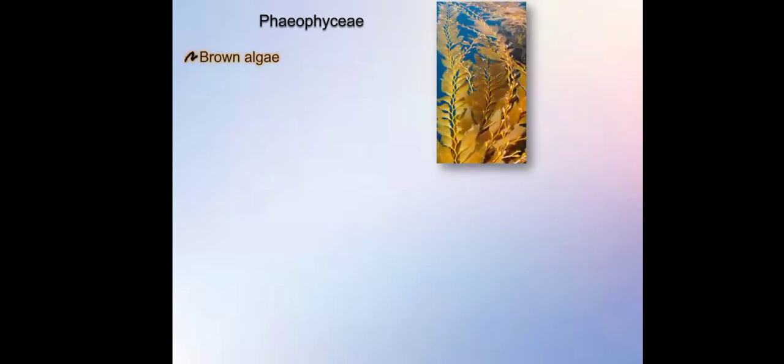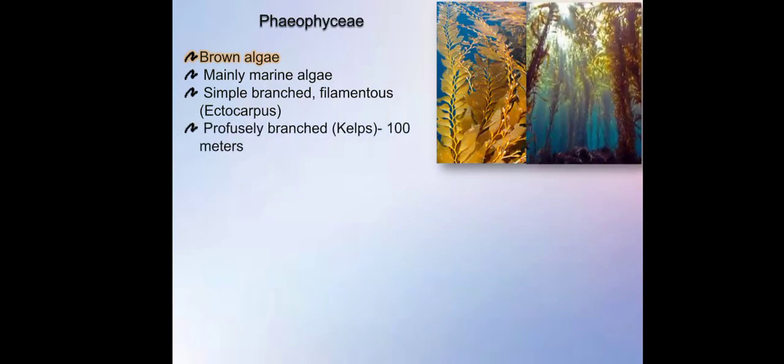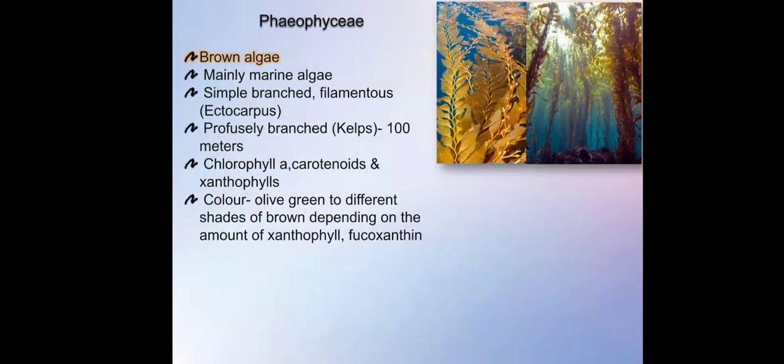Now we will discuss about Phaeophyceae or brown algae. They are mainly marine algae found in the ocean. They are simply branched filamentous like in Ectocarpus or profusely branched like kelps which are 100 meters tall. They have chlorophyll a, carotenoids, and xanthophylls. Their color varies from olive green to different shades of brown depending on the amount of xanthophyll and fucoxanthin present inside them.